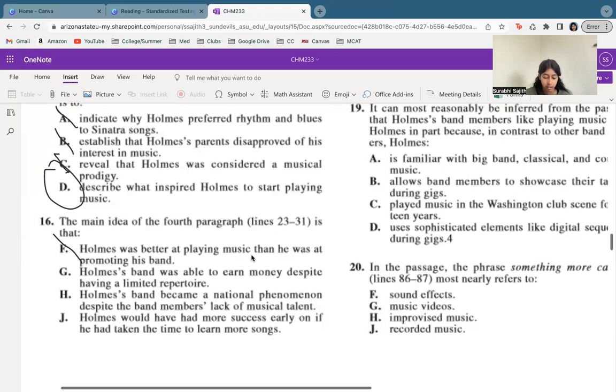There's no national phenomenon happening in this paragraph. And then also the early success is also not true. So G is definitely the best answer in this case.